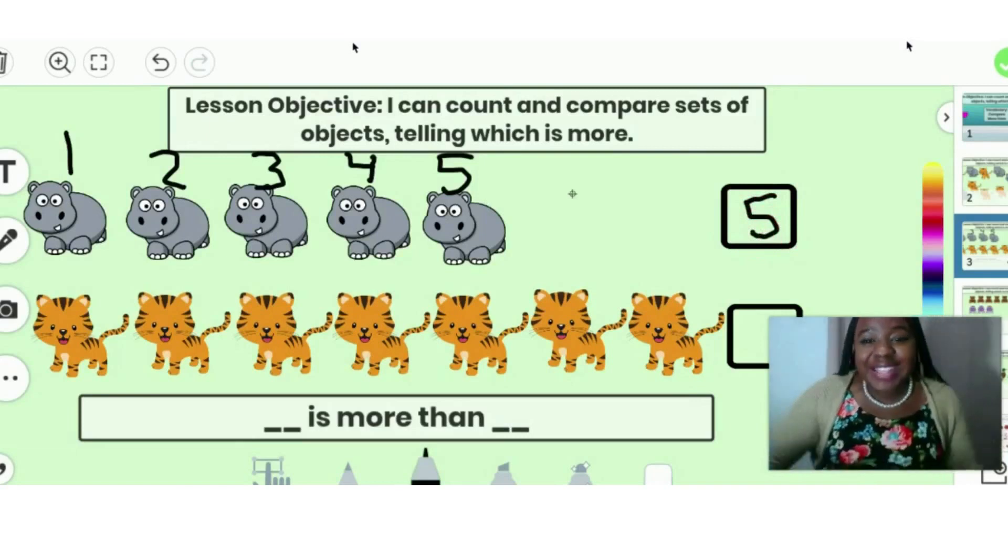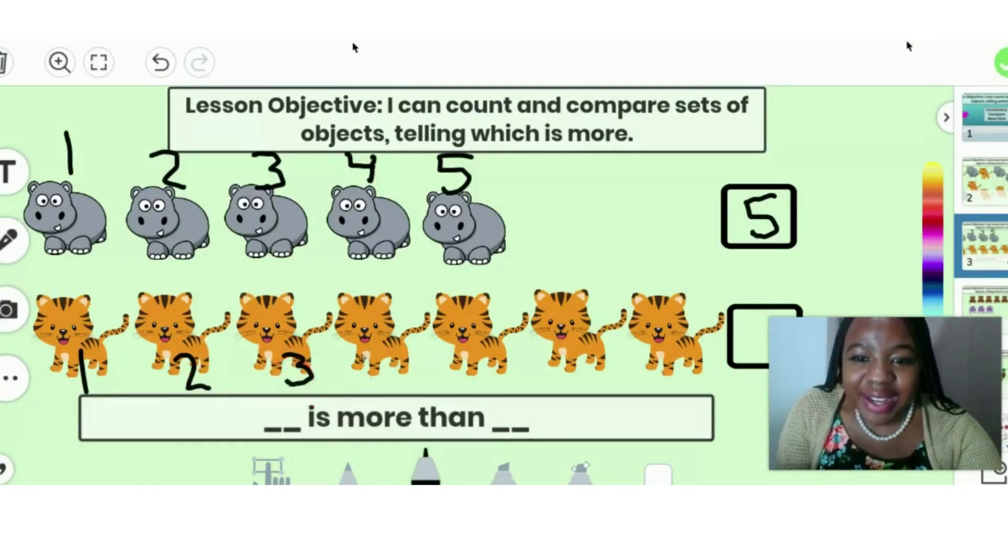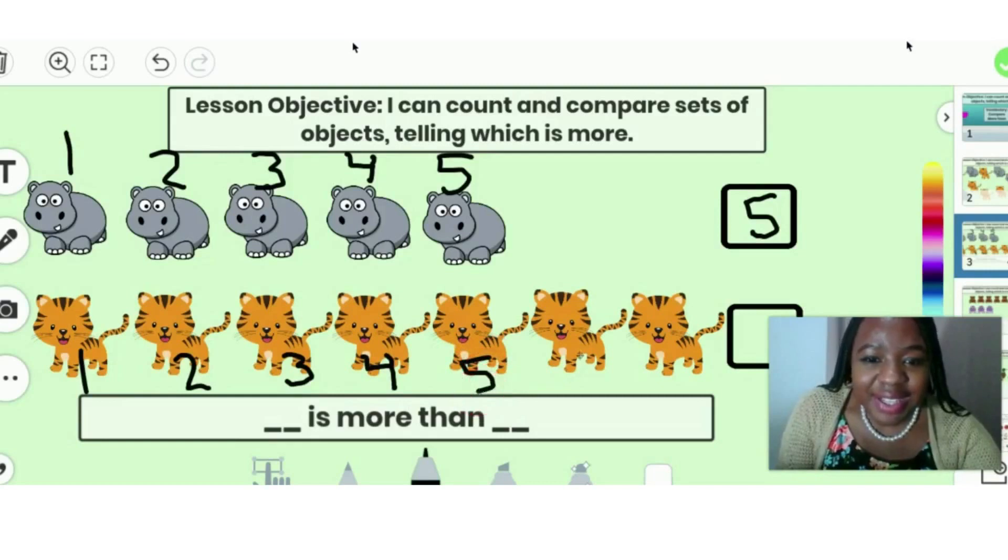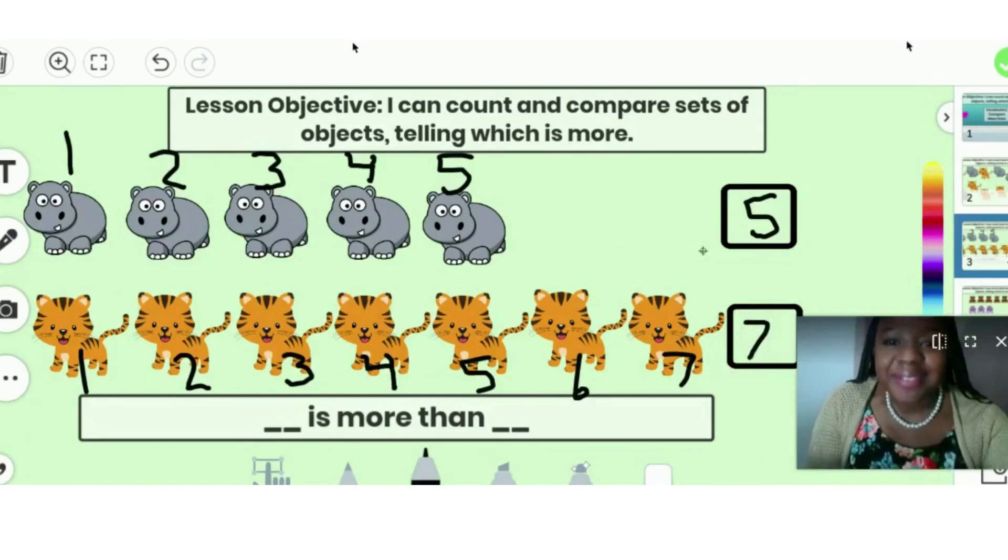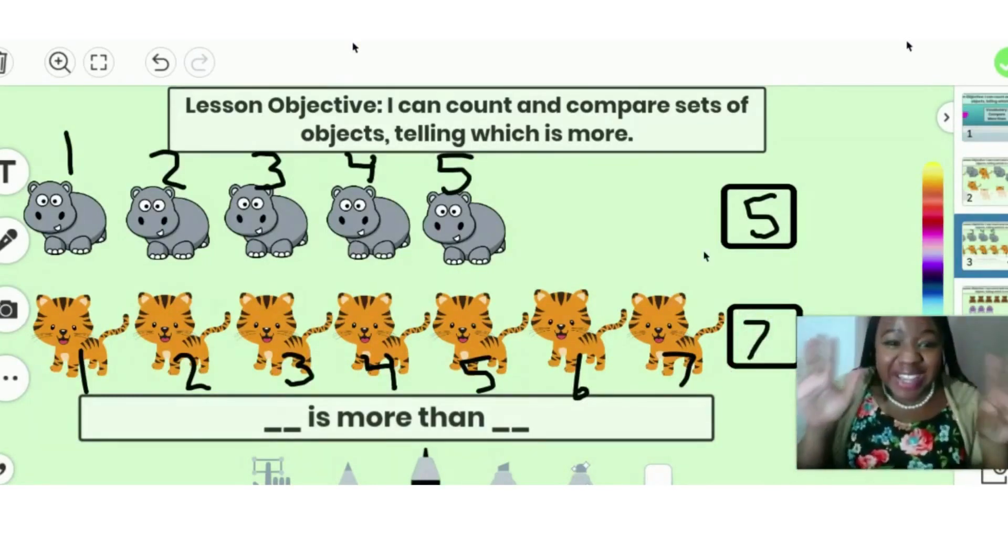Now let's count the tigers. One, two, three, four, five, six, seven. Seven tigers. Very good! So we have five hippos and seven tigers.